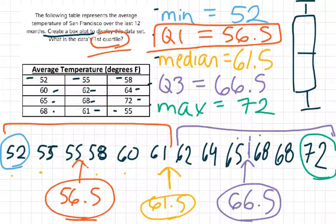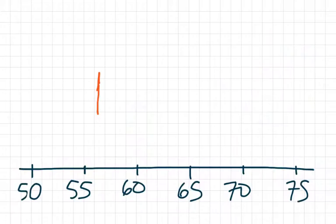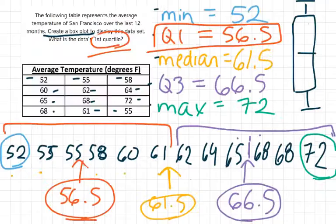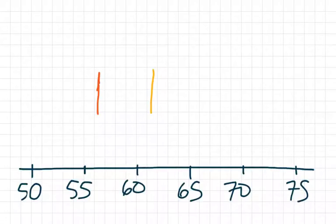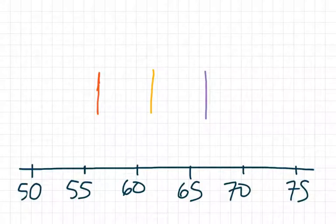And now let's go get our median 61.5. That's going to be right here. Q3, our third quartile is 66.5. So we'll plot that right here, 66.5.